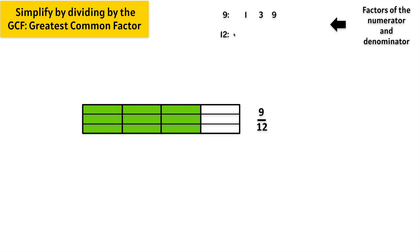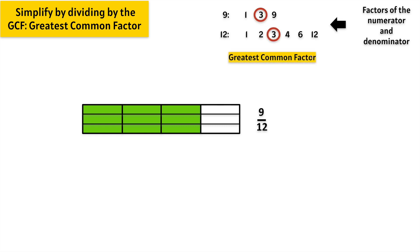Let's find the factors that multiply to make 12. 1 times 12 equals 12, 2 times 6 equals 12, and 3 times 4 equals 12. These are the only numbers that multiply to make 12. We notice they have 1 in common, and they also have 3 in common. The 3 is the greatest common factor of 9 and 12.